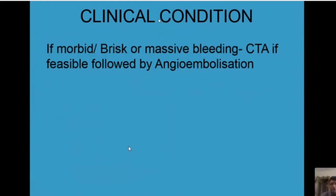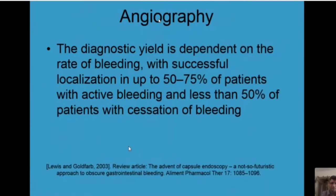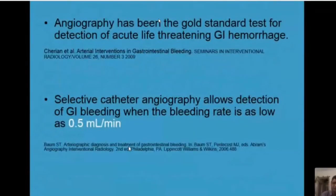Whenever possible, always ask for CT angiogram. Never refuse a CT angiogram — even if creatinine levels are high and the patient is bleeding, remember it's a life-saving procedure. The indications for IR to step in include failure of endoscopy, significant re-bleeding after endoscopic treatment on first or second attempt, or if the patient requires more than five transfusions every 24 hours. We may decide to step in early if the patient is elderly with multiple comorbidities. The yield of angiography is 50 to 75%, and angiography has been the gold standard test for detection of acute life-threatening GI hemorrhage.